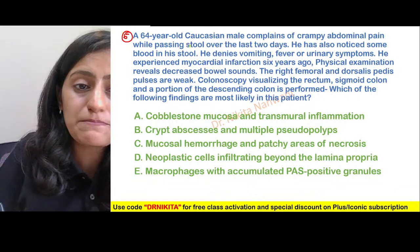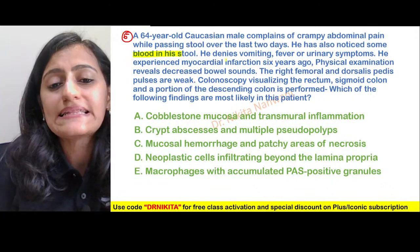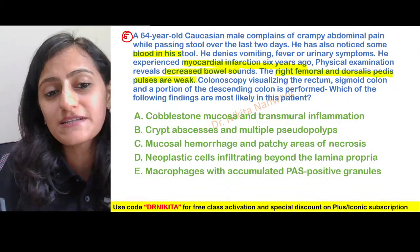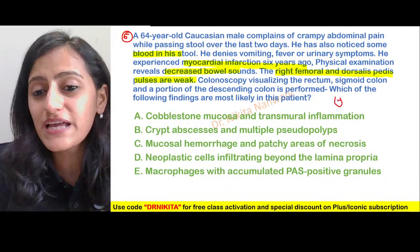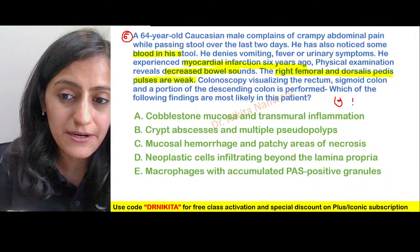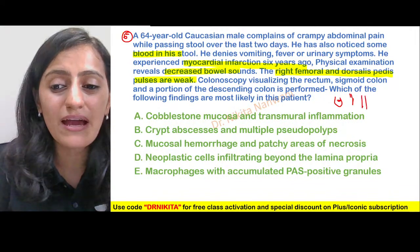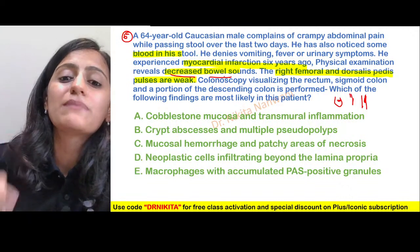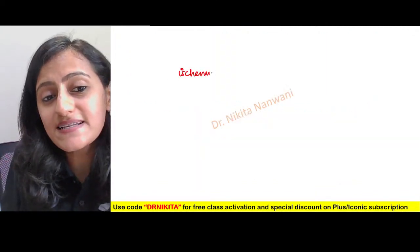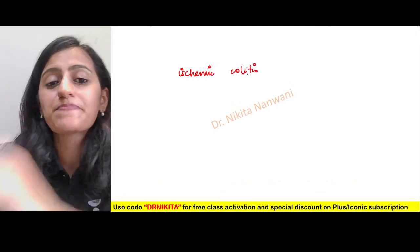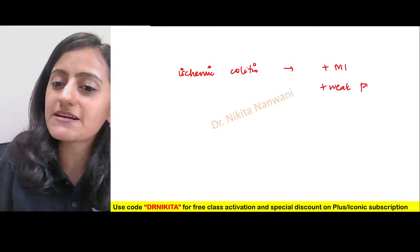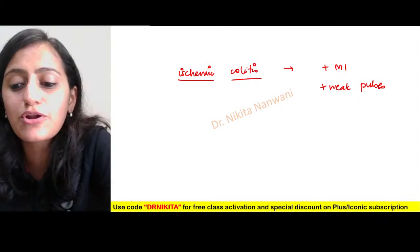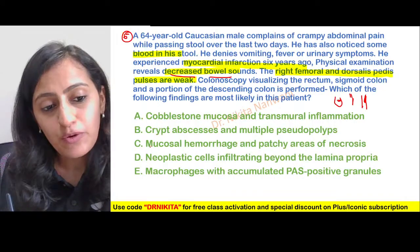All findings point to ischemic colitis: the MI history indicates decreased blood supply and atherosclerotic changes (narrowing) systemically, affecting the bowel's blood supply as well. Weak pulses confirm widespread atherosclerosis. In ischemic colitis, the histological finding is mucosal hemorrhage and patchy areas of necrosis due to ischemia setting in.